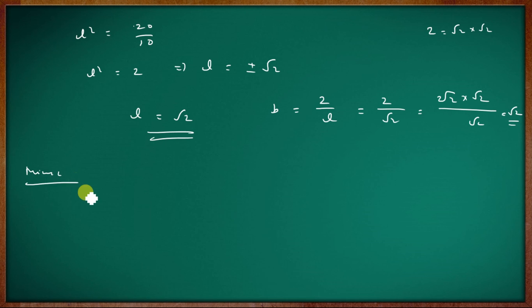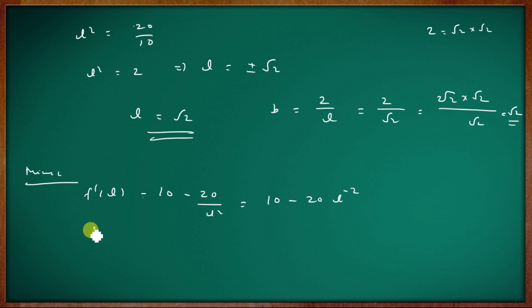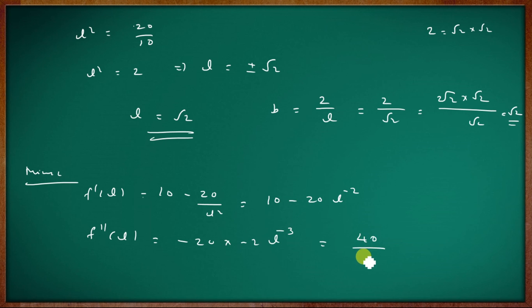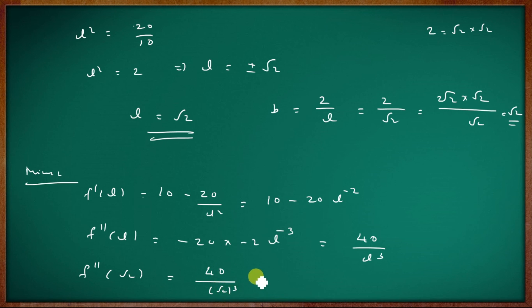To confirm this is a minimum: f''(L) = 40/L³. At the critical point L = √2, f''(√2) = 40/(√2)³, which is always greater than zero. Therefore this confirms a minimum point.